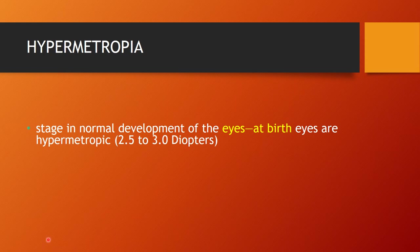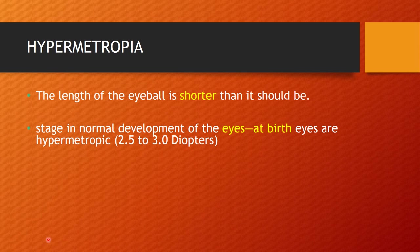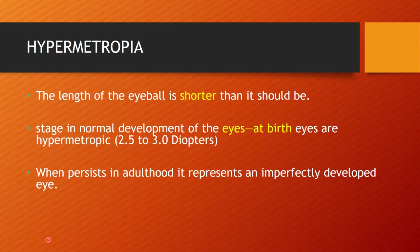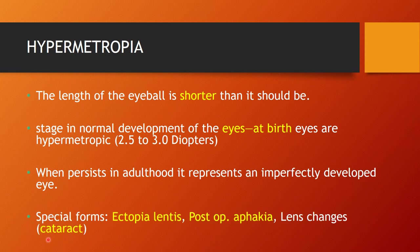Hypermetropia is actually a stage in the normal development of the eye — babies are born slightly hypermetropic and as they grow the hypermetropia decreases. The length of the eyeball is shorter than it should be. When this persists in adulthood, it indicates a slightly imperfectly developed eye. Special forms include ectopia lentis where the lens has left the visual axis. Previously, when intraocular lenses were not available, aphakia was the outcome of surgery; post-operative aphakia and lens changes due to cataract can also lead to a hypermetropic shift.